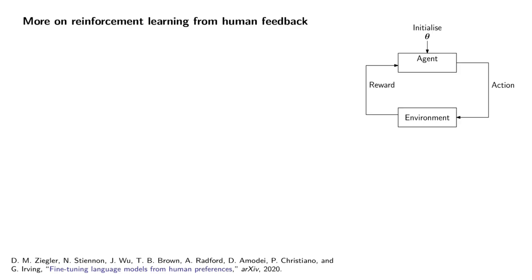That's where reinforcement learning from human feedback comes in. We're going to train a little model that basically predicts how a human would have ranked a particular output, given the input that the model received. So here's the aim of the game: we want to change this model to look more like an assistant. We're going to feed this model a prompt, and then have it produce some output — some action, which is an answer to that prompt.